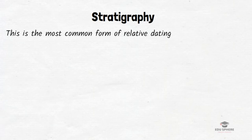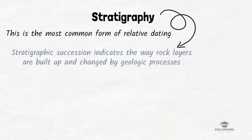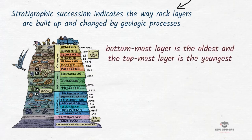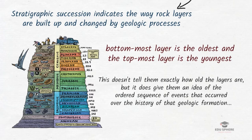First comes Stratigraphy. The most common form of Relative dating is Stratigraphic Succession. This is a term for the way rock layers are built up and changed by geological processes. Scientists know that layers they see in sedimentary rocks were built up in a certain order from bottom to top. When they find a section of rock that has a lot of different strata, they can assume that the bottom-most layer is the oldest and the top-most layer is the youngest. This doesn't tell them exactly how old the layers are, but it does give them an idea of the order sequence of events that occurred over the history of that geological formation.